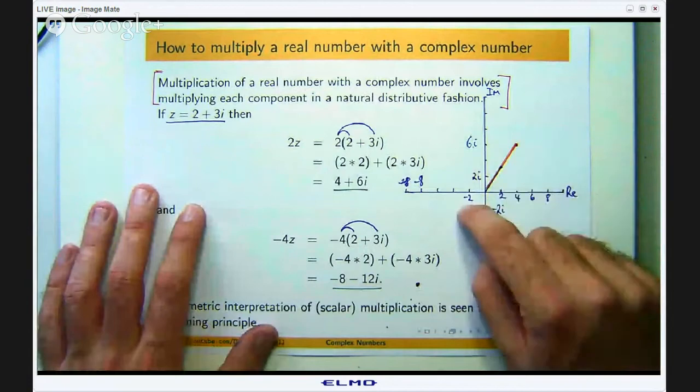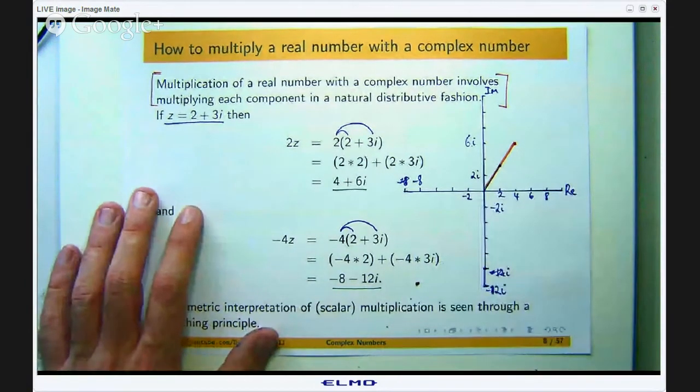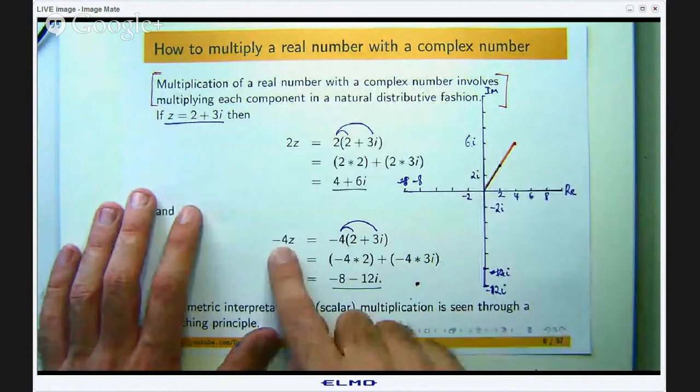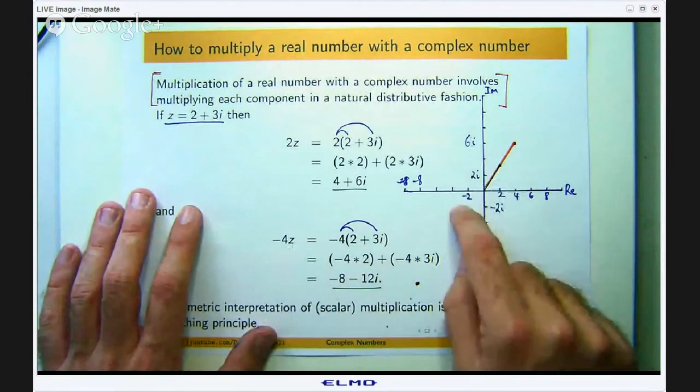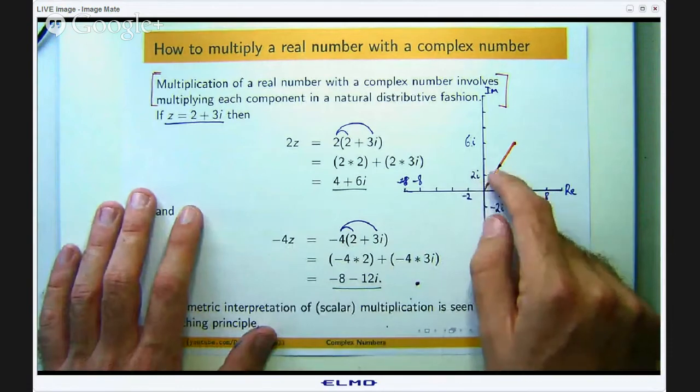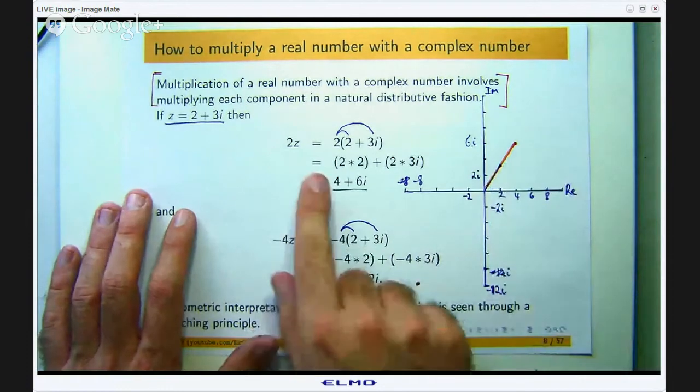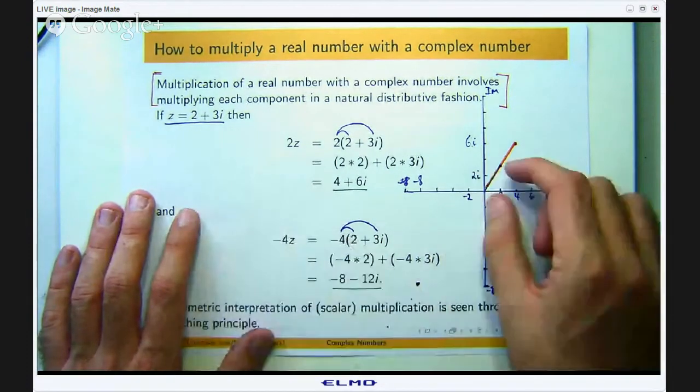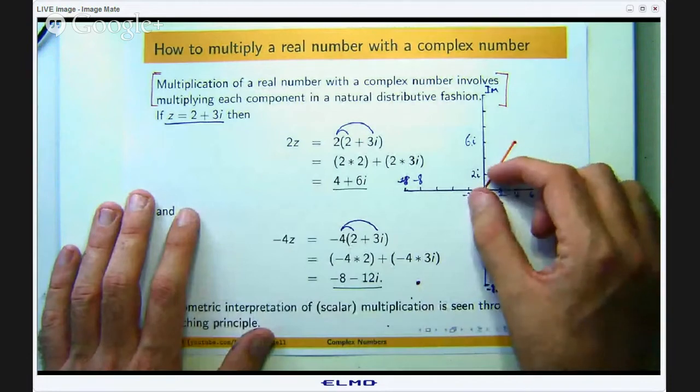So you can see what has happened. From this it has been flipped and then stretched by a factor of 4. When you multiply by a negative number you flip the original line segment associated with the complex number and then you stretch or compress it. Now if I was multiplying through by say a half instead of stretching this line segment I would be compressing it down.